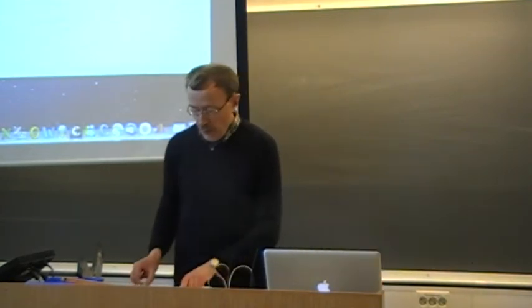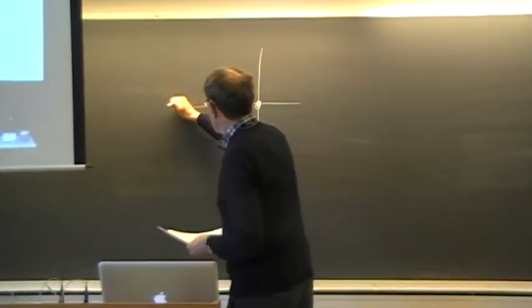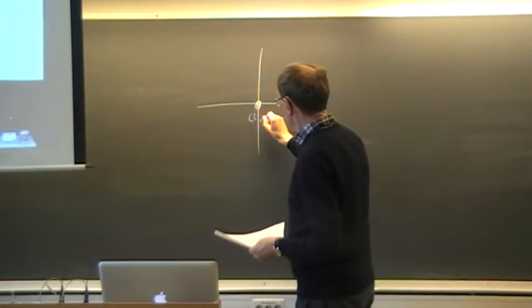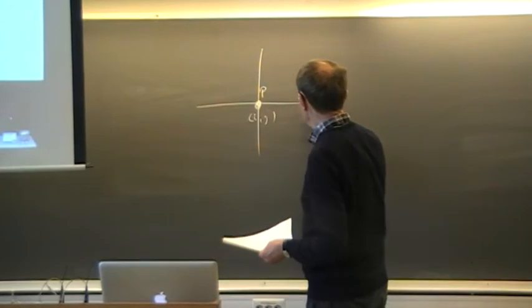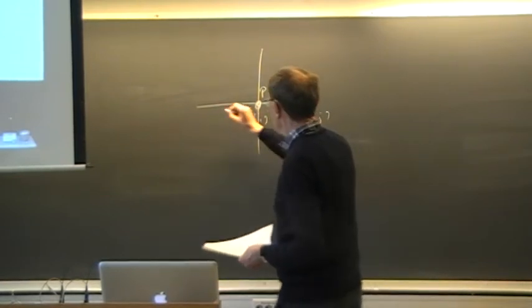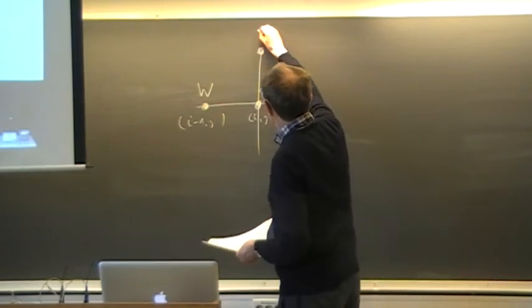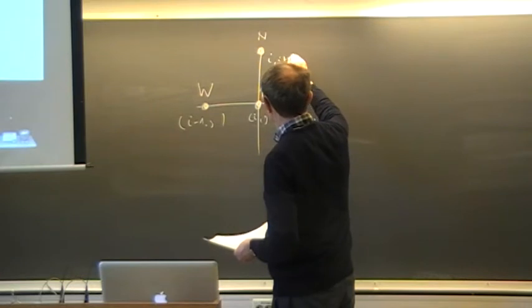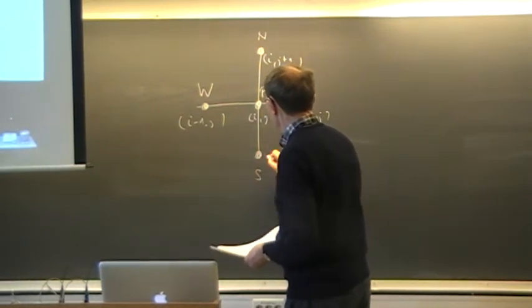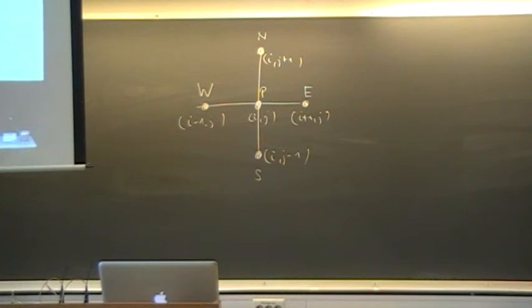Good morning, welcome. We have been discussing the Poisson equation and we've been looking at the standard finite difference method for that. We had the stencil where we have the center point denoted either by IJ or by point P, then with the eastern neighbor E that is I plus 1 J, the western neighbor which is I minus 1 J, the northern neighbor which is IJ plus 1, and the southern neighbor which is IJ minus 1, so that makes the five-point stencil that we have been using for discretizing the Poisson equation.